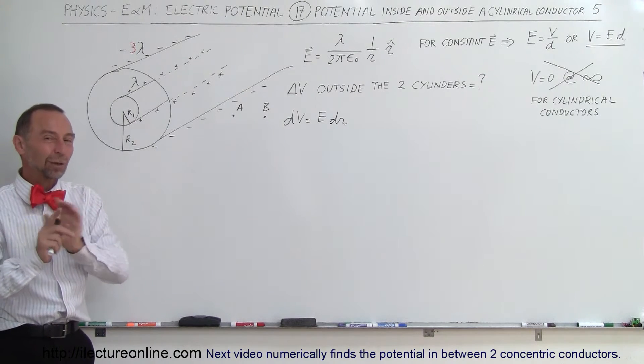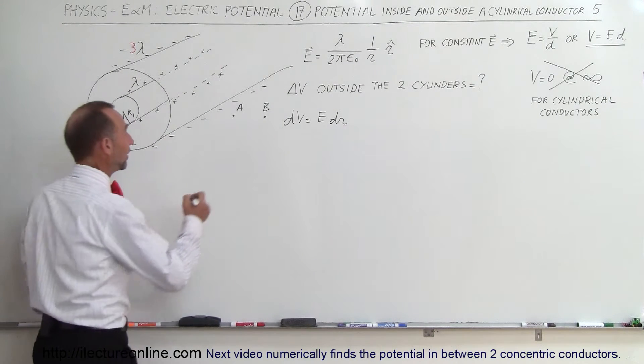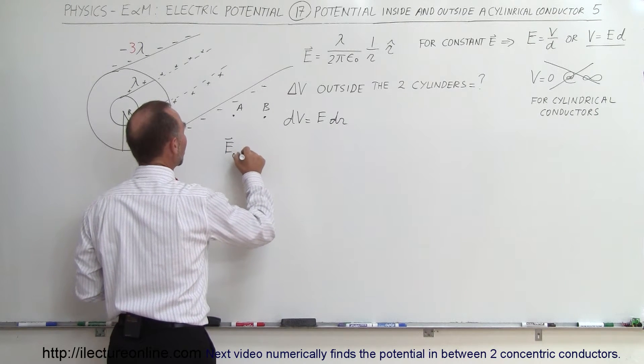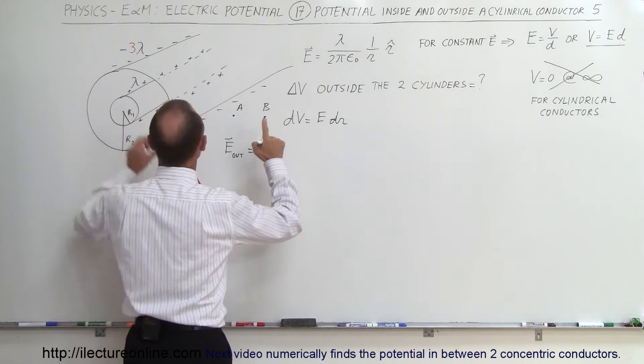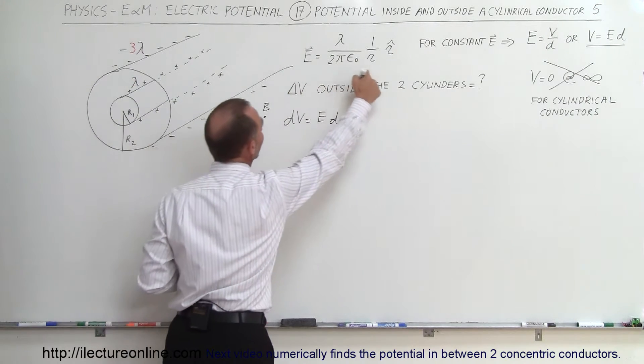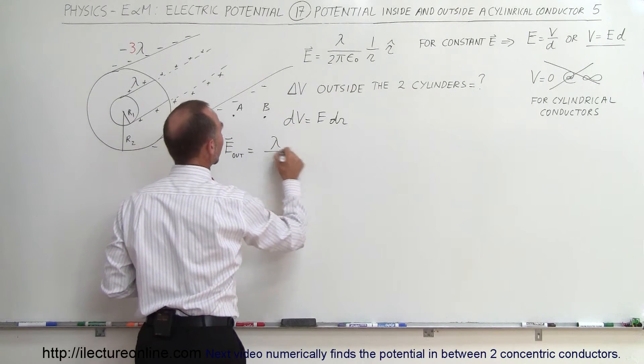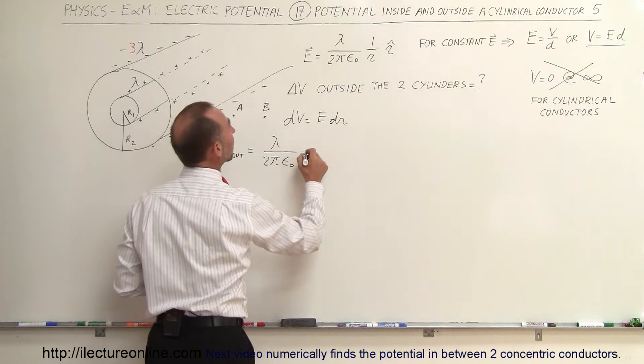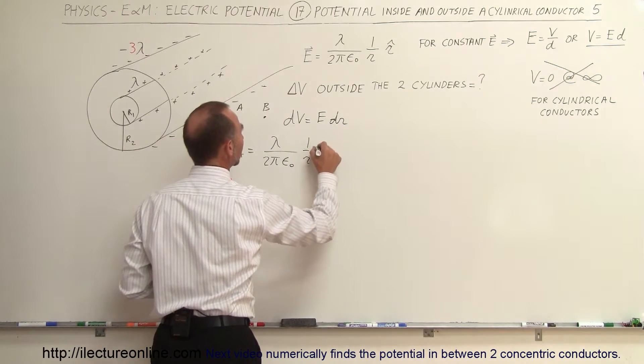Now we know the electric field outside will not be equal to zero. Matter of fact, the electric field on the outside will simply be equal to the electric field caused by the inside, which is going to be based on this formula right here: λ divided by 2πε₀, that's a 2, times 1 over r in the r direction.